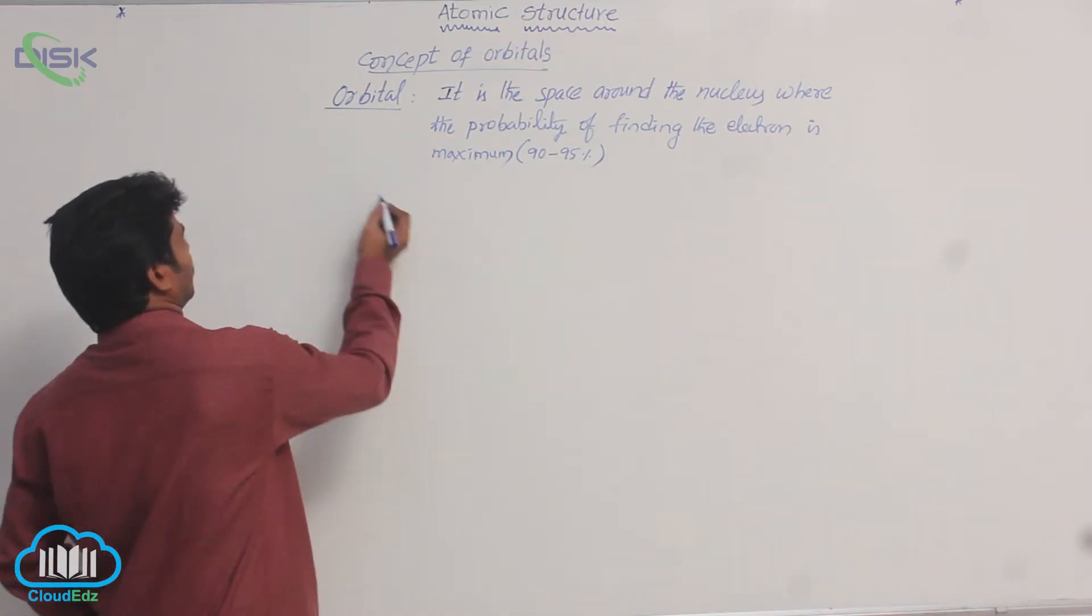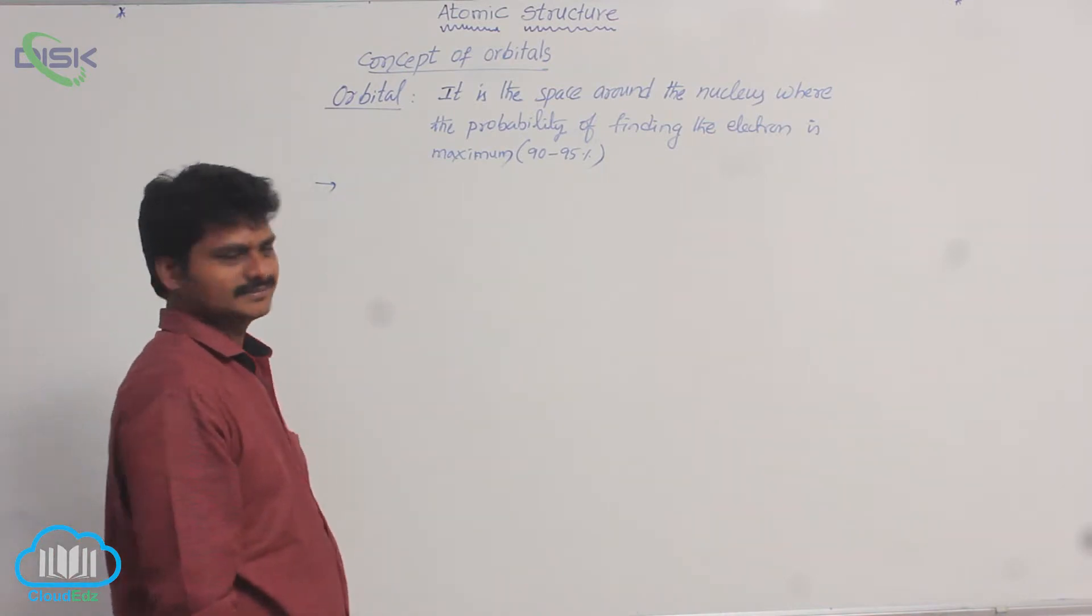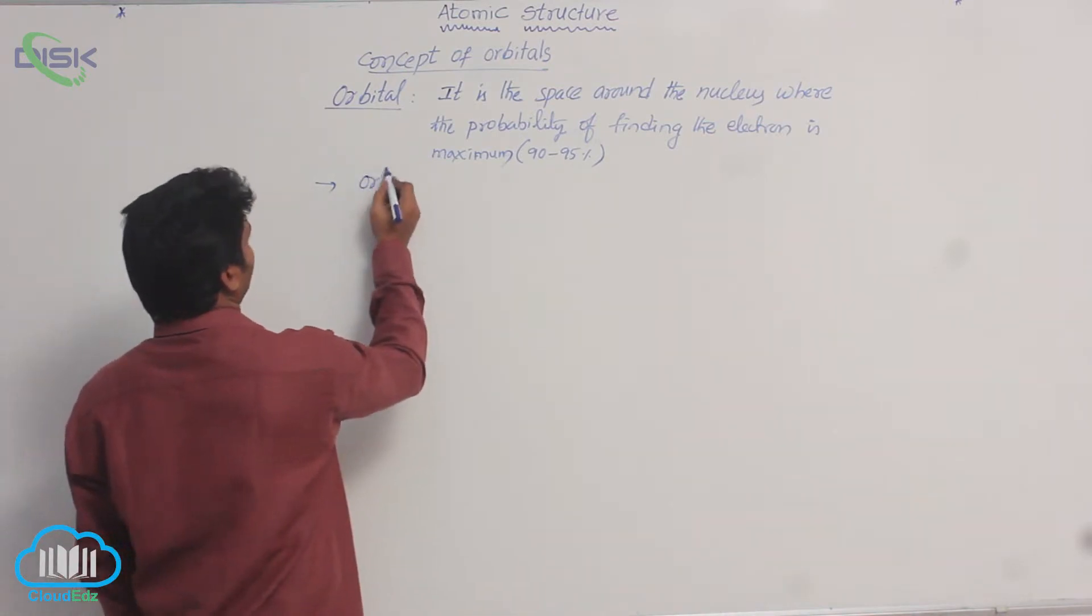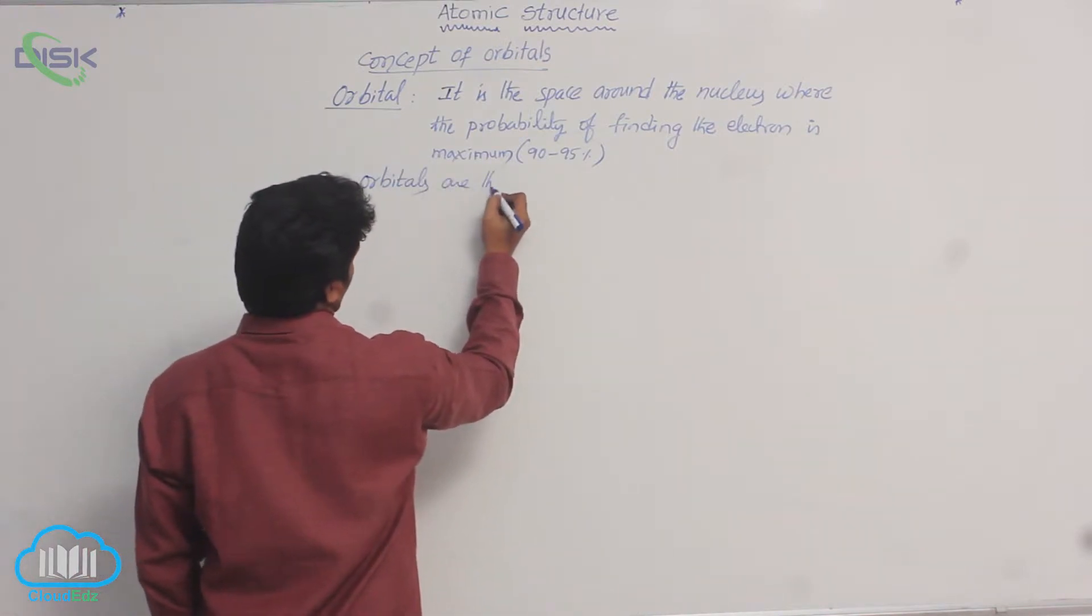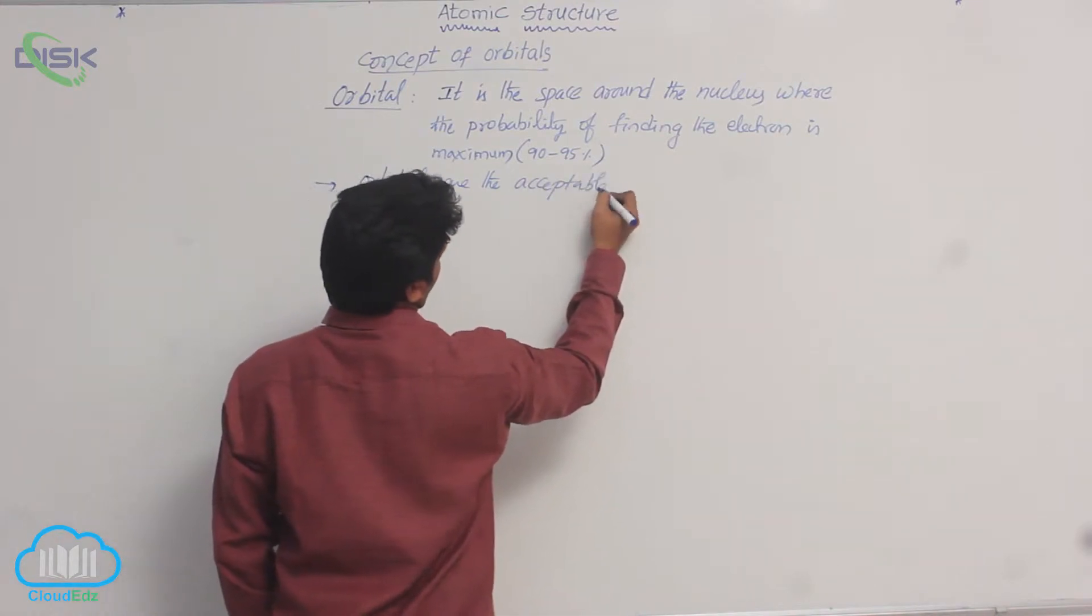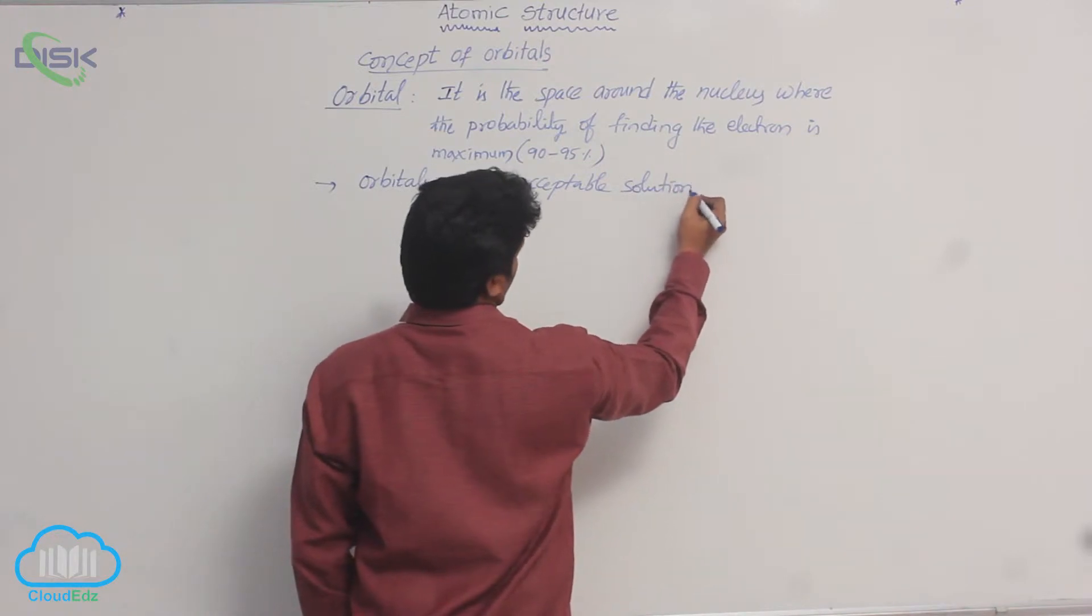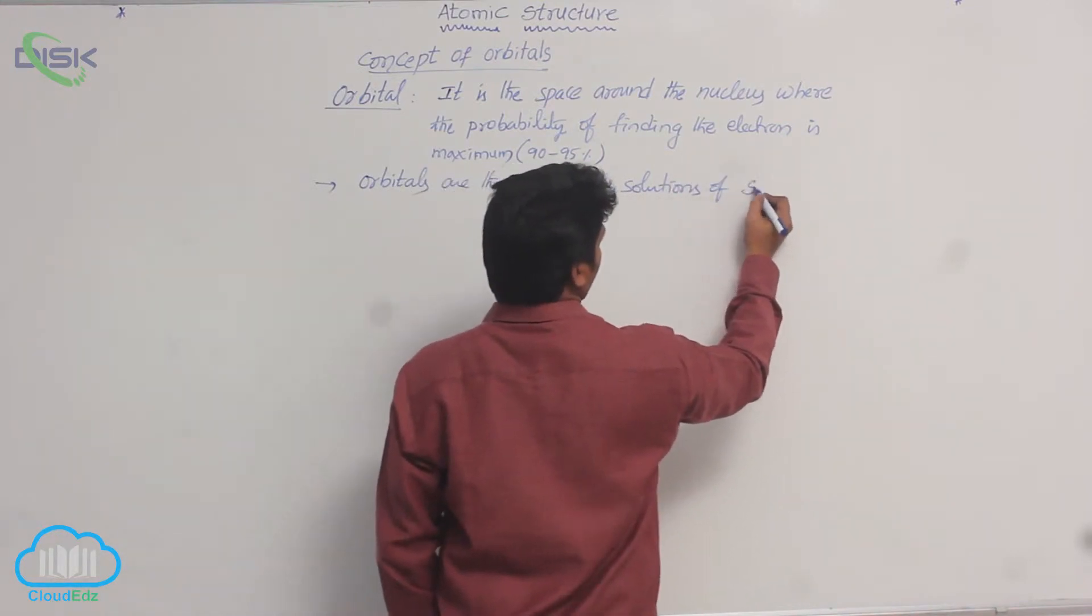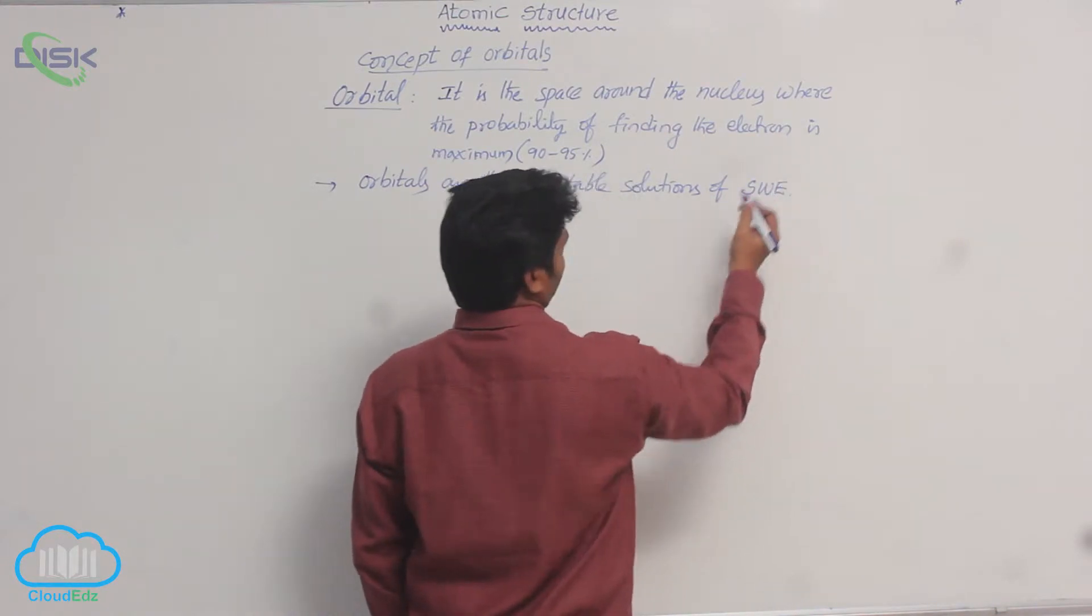Now, how is this orbital obtained? Orbitals are nothing but the acceptable solutions of Schrödinger wave equation of the atom.